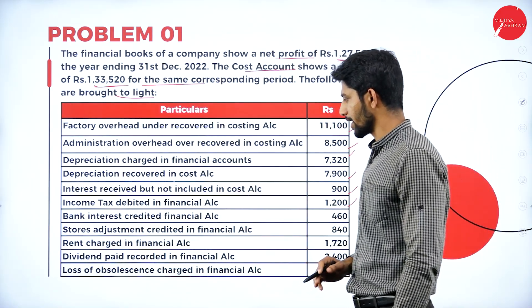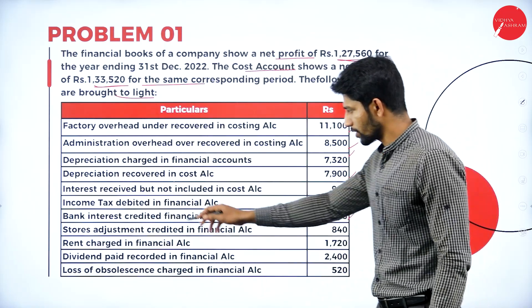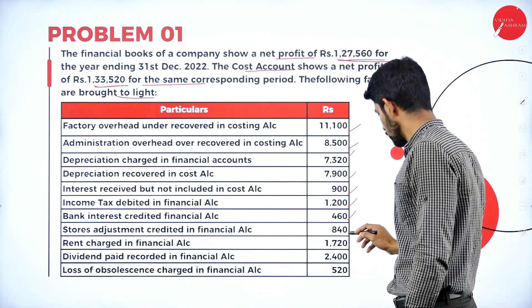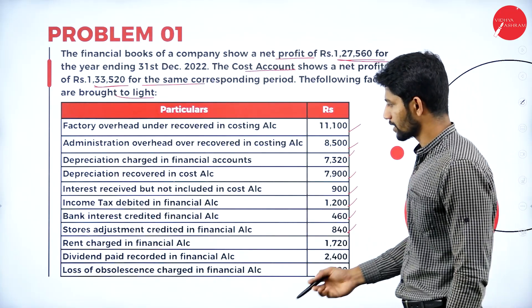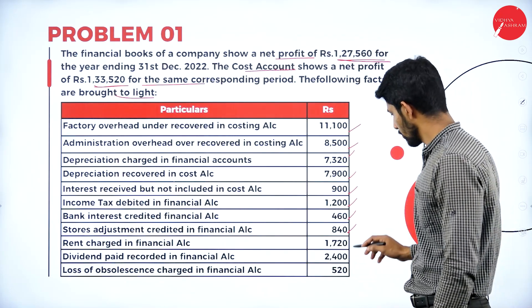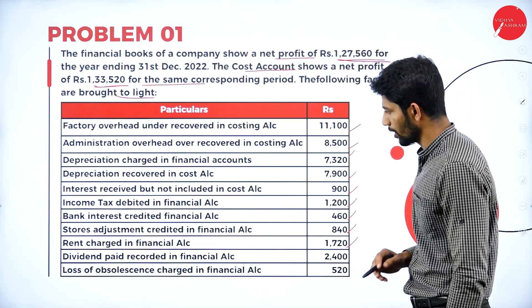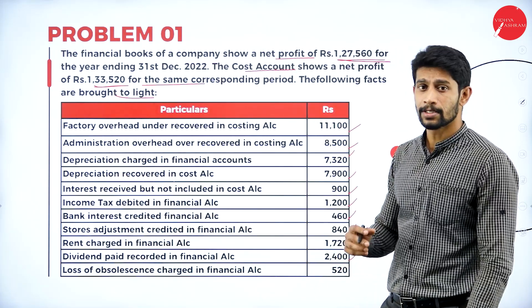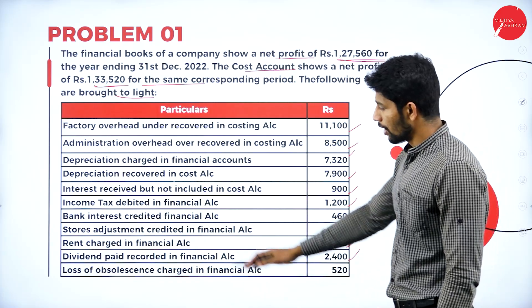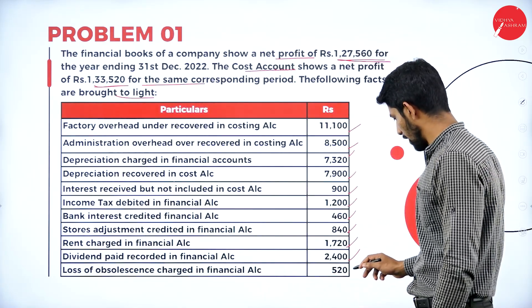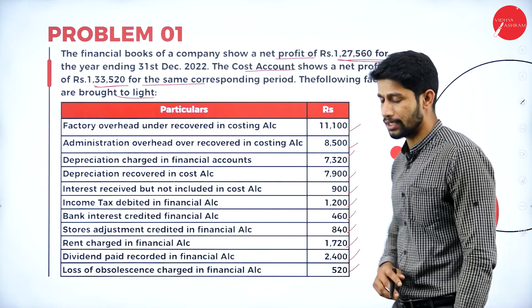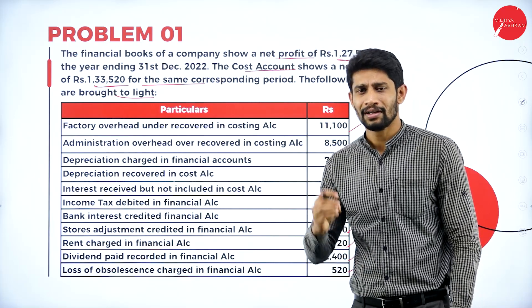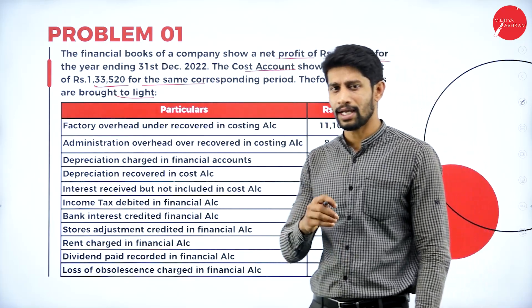Next, bank interest credited in financial accounts: Rs. 460. Next, stores adjustments credited in financial accounts: Rs. 840. Next, rent charged in financial account: Rs. 1,720. Next, dividend paid recorded in financial accounts: Rs. 2,400. Loss of absence charged in financial account: Rs. 520. These are all the adjustments with respect to the profit of financial books as well as costing books.